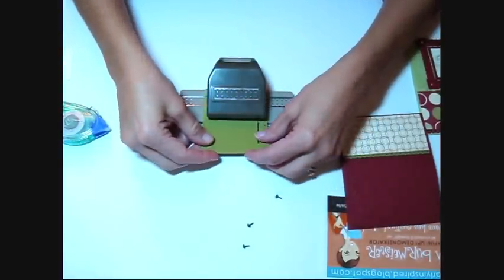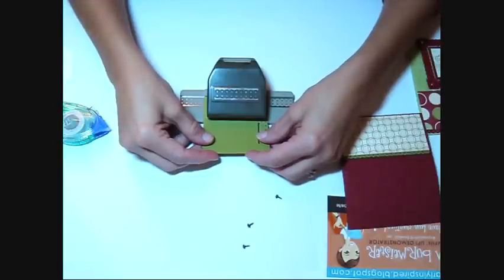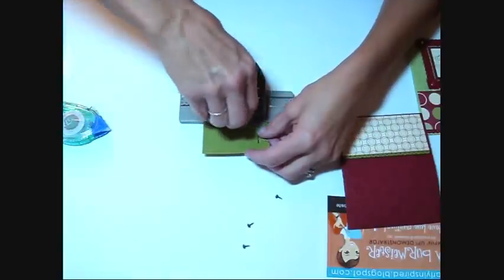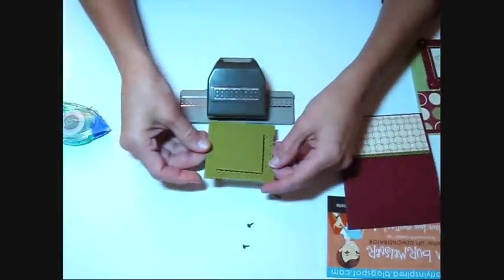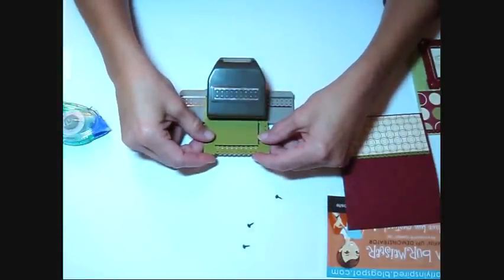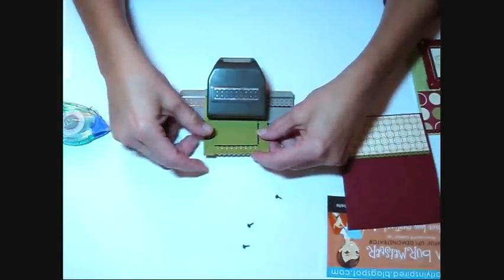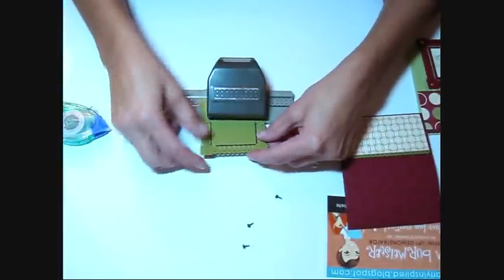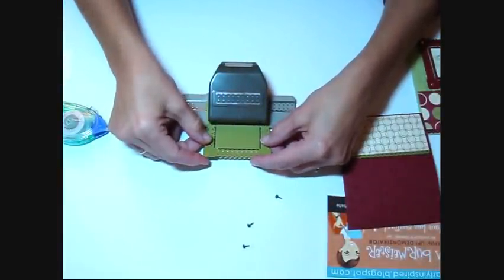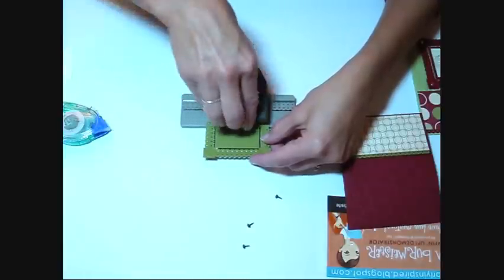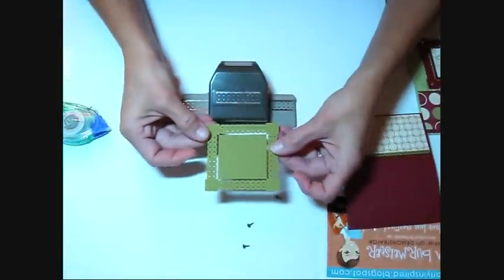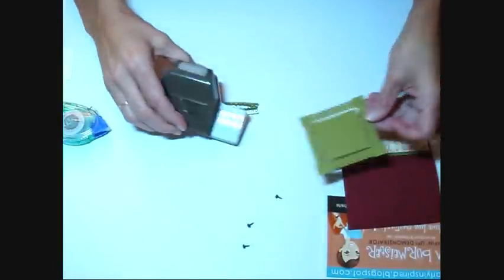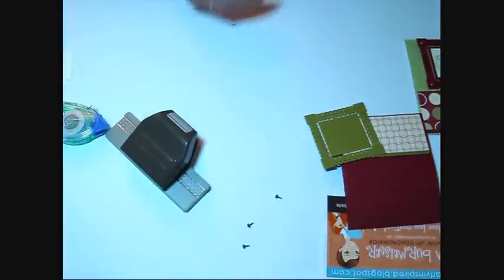Then you turn it and you do it the same place. So you line it up in the middle. Punch it down. Then you turn it again. Line it up in the middle. Punch it. And then one more time. One more time. Here we go. And that's how you get your frame. That is so cool. I love it. I'm going to throw these little itty bitty pieces away.